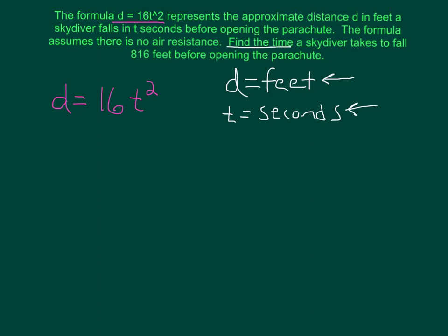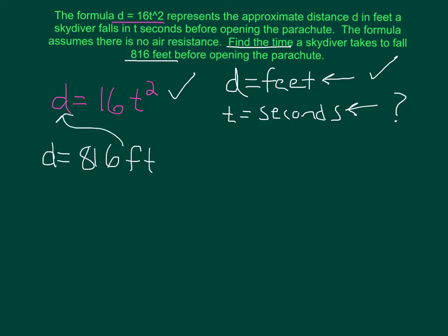We have to find the time it takes a skydiver to fall 816 feet before opening the parachute. They give us the formula and the distance, and ask us to find the time. The distance is 816 feet. Rewriting the original formula with 816 plugged in for d: 816 equals 16 times t squared, and we have to solve for t.